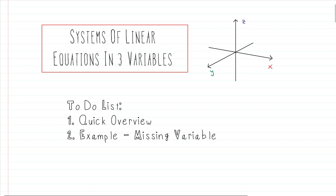I have three or four different videos discussing systems of linear equations in three variables. I have one discussing the infinite solution case, the no solution case, the one solution case, and one discussing in general what a system of linear equations in three variables is. But this one specifically talks about what you do when you have a missing variable.